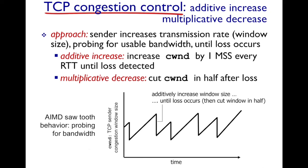Hi everyone. In this video we're going to talk about the congestion control aspect of TCP. Why do we need congestion control in the internet? There are multiple flows in the internet and the goal is to make sure that each and every flow gets its fair share. A single flow cannot hog the entire bandwidth that is available. So this is why TCP implements congestion control.